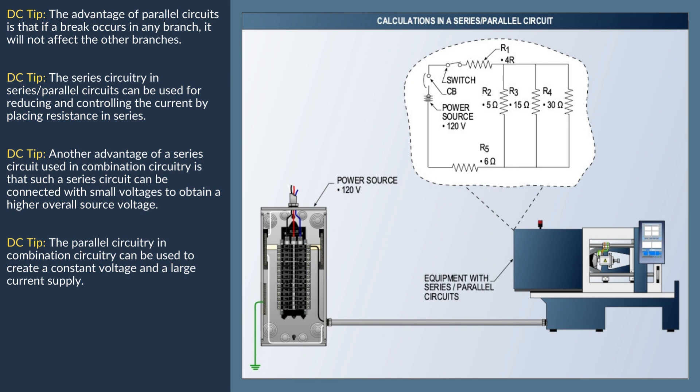A circuit can contain resistances in series and in parallel. Such loads of the circuit must be solved separately and the results must then be combined. In the illustration, there are two resistances in series and a group of three resistances in parallel. In this circuit, values of R1 = 4 ohms, R2 = 5 ohms, R3 = 15 ohms, R4 = 30 ohms, and R5 = 6 ohms are assigned.